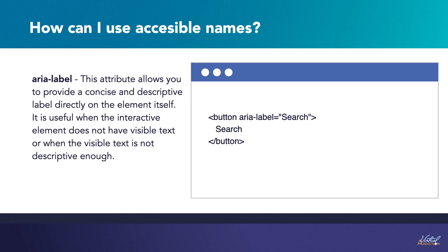To use accessible names for interactive elements using ARIA, you can utilize ARIA attributes and techniques to provide descriptive and meaningful names. The first is aria-label. This attribute allows you to provide a concise and descriptive label directly on the element itself. It is useful when the interactive element does not have visible text or when the visible text is not descriptive enough. For example, the aria-label attribute can provide an accessible name like 'search' for a button, ensuring that screen readers announce it properly.